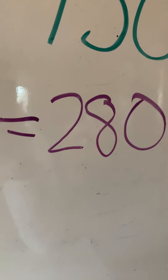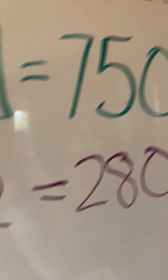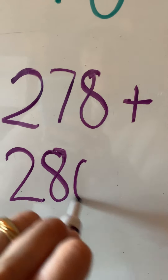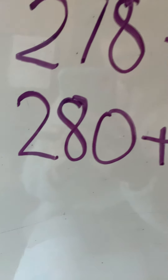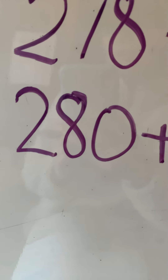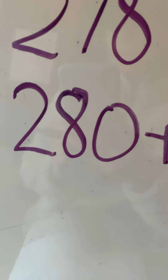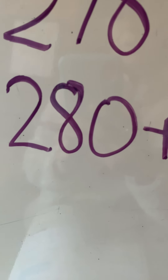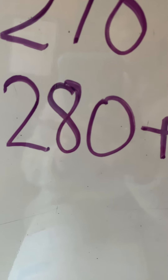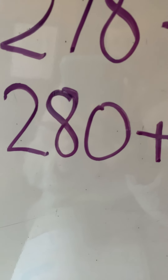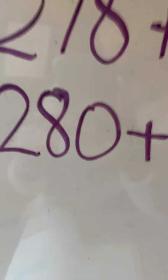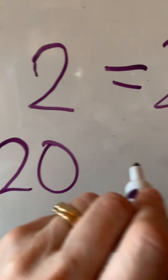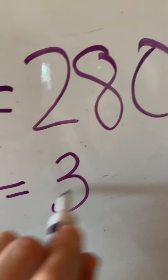Now we're up to 280. We still need to get up to 750. So next, 280 plus — we're going to get to the next 100. We're at a nice round number of 80. How many will we add to 80 to get to 300? How many would you add to 80 to get 100? That's right, 20. So we're going to add 20 to 280 and we get 300.